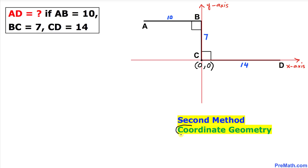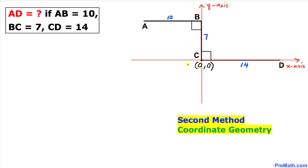Now let's get started with our second method called coordinate geometry, using x-y coordinates. I have superimposed our figure onto the x-y plane such that point C is at the origin (0, 0). Point B's location is (0, 7), point A is at (-10, 7), and finally point D is at (14, 0).